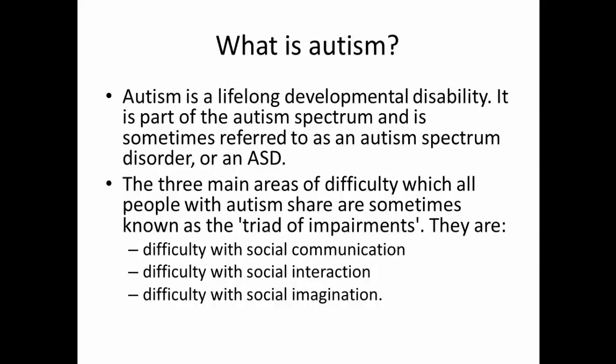Common to all people with autism there are three main difficulties, often called the triad of impairments. The first is difficulty with social communication — that can be verbal and non-verbal. They may have difficulties letting other people know what they think and feel, find it difficult to make eye contact, often use repetitive speech, and can be anxious in social situations.